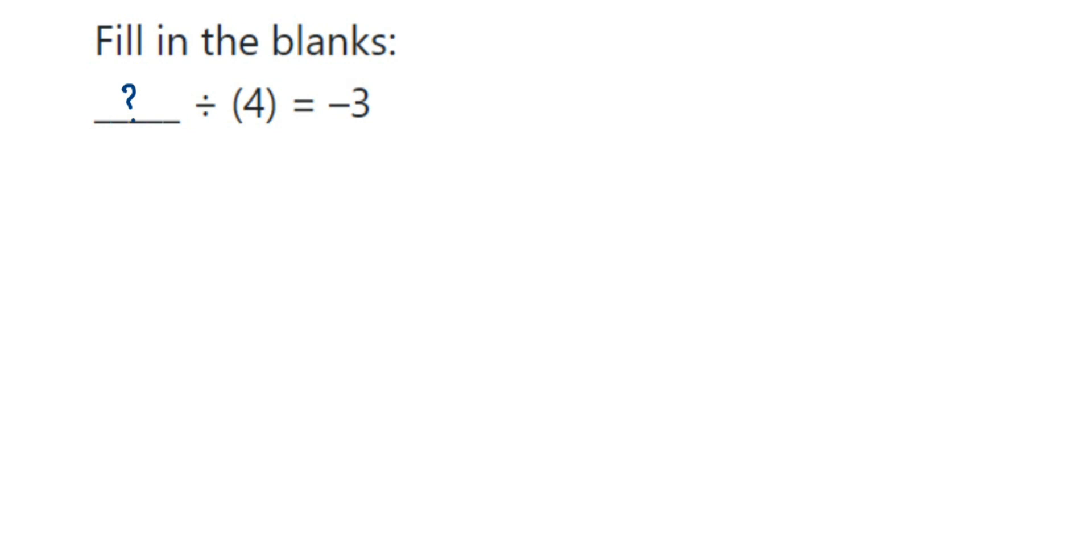Since we don't know this number, let us assume the number will be x. So x divided by 4 is equal to minus 3. This can also be written as x divided by 4 equals minus 3.